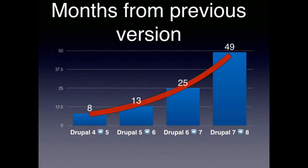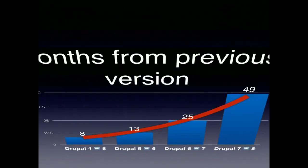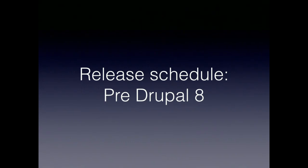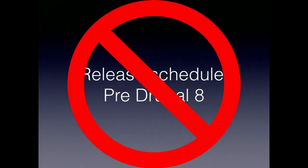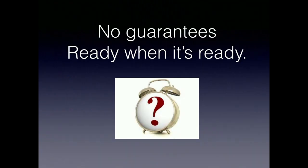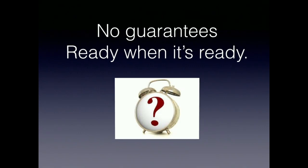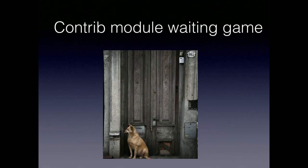The label above the graph says 'months from previous versions.' You get the idea — this is a trend we probably don't want to continue. Pre-Drupal 8 there really wasn't a release schedule — no guarantees, it's ready when it's ready. After core was released you had to play the contrib module waiting game: Drupal 7 releases, then you wait for all the contrib to get ready. Hopefully we're near the end of that cycle for Drupal 7 to Drupal 8.